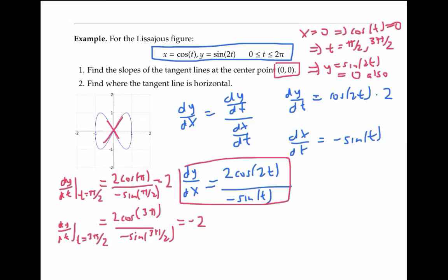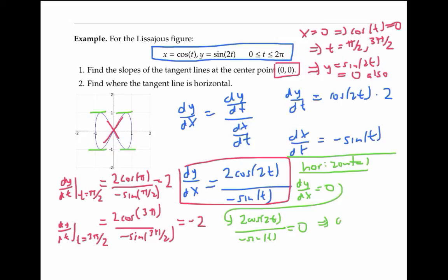Next, let's find where the tangent line is horizontal. From the figure, there should be four places. If we set dy/dx = 0, we get that 2cos(2t) / -sin(t) needs to be zero, which means we need cos(2t) = 0.